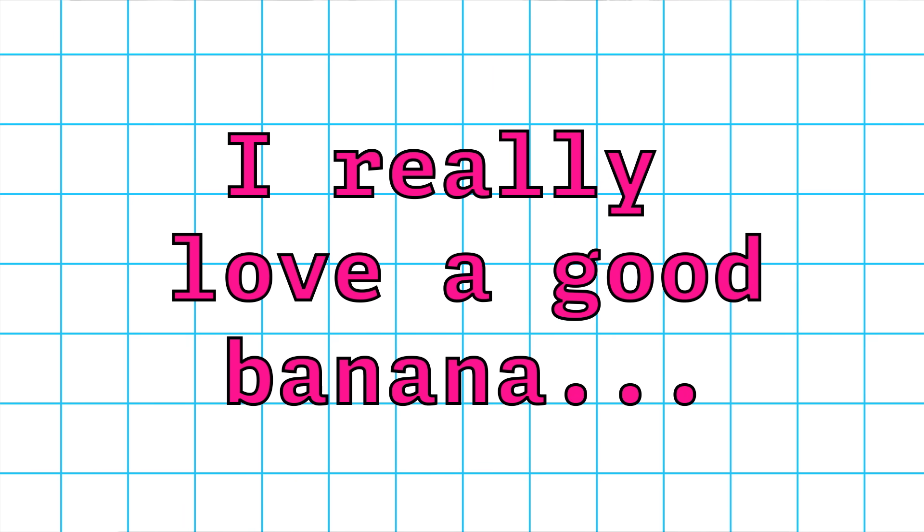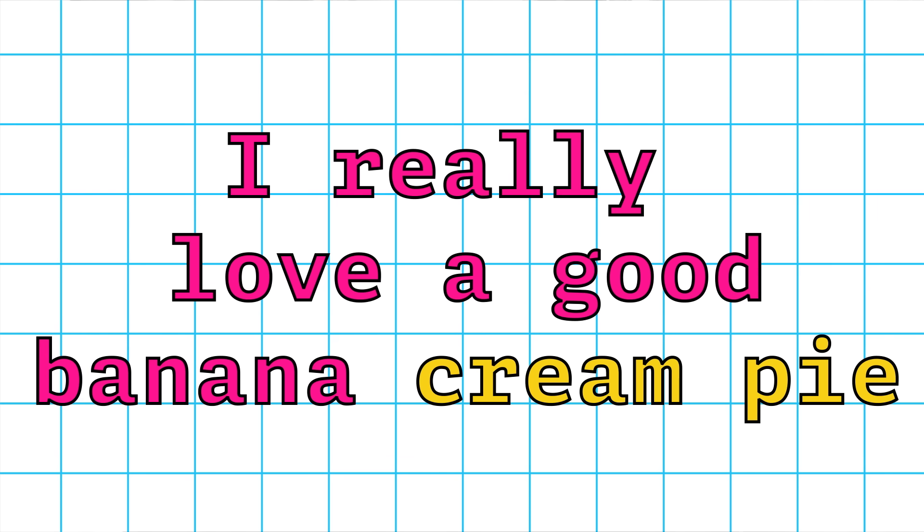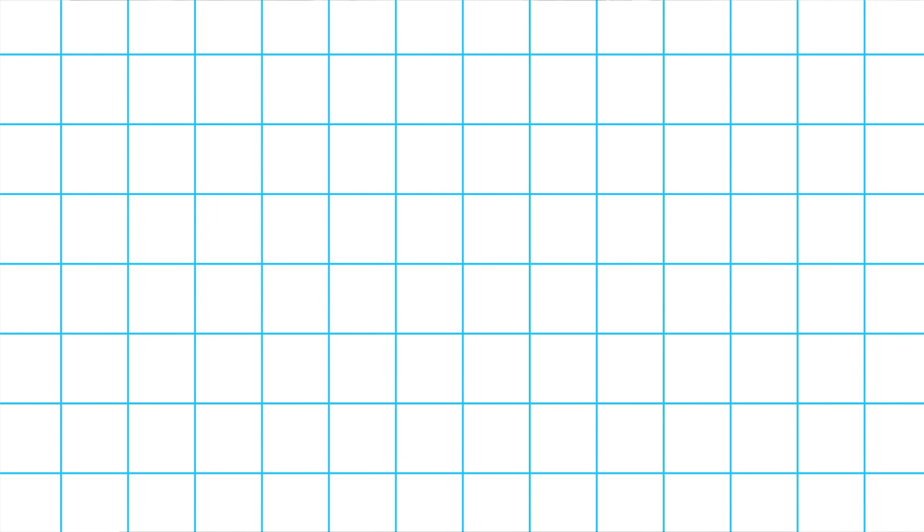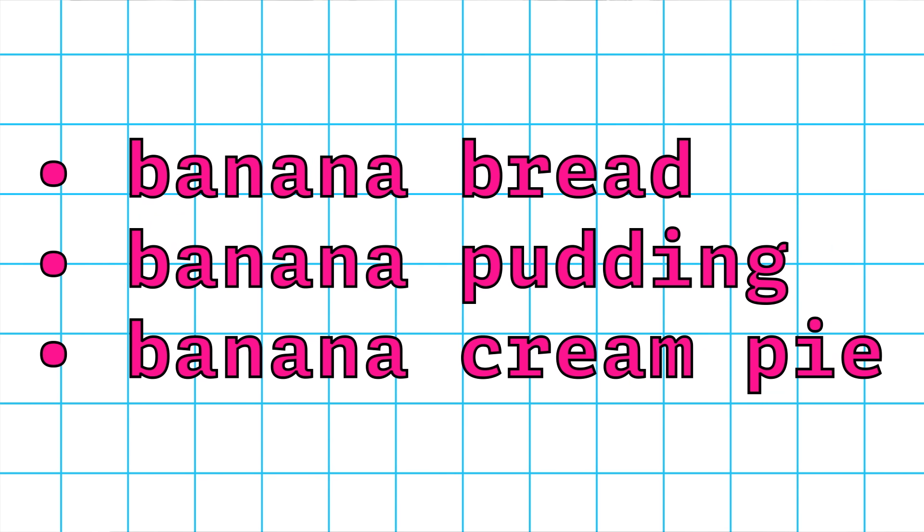Now we have to talk about a very important point: these models and their output are non-deterministic. They're based on a probability curve used to predict what the next word may be, but it might be something totally different. So for the same input, you could get a completely different output the next time. For example, if I provided input like 'I really love a good banana,' a GPT model may respond with something like 'bread' or 'pudding' or 'cream pie,' because based on the data it's been trained on, those are semantically similar terms commonly found with banana.